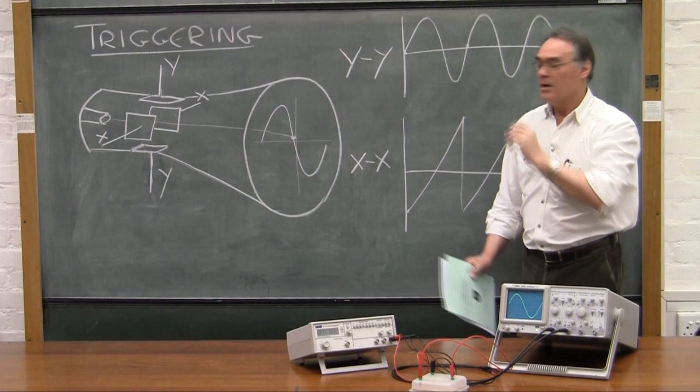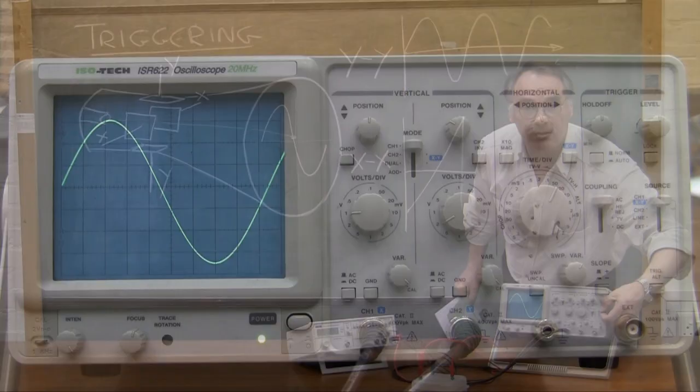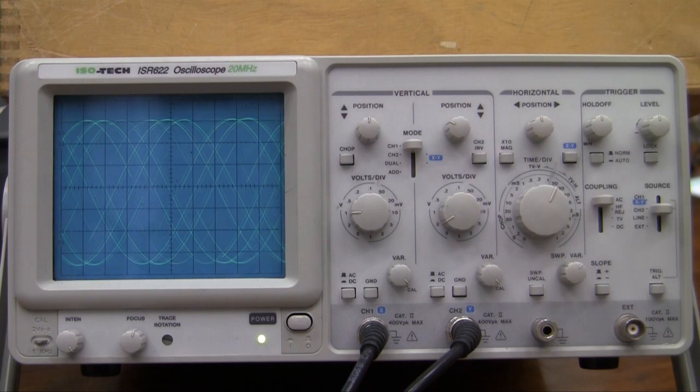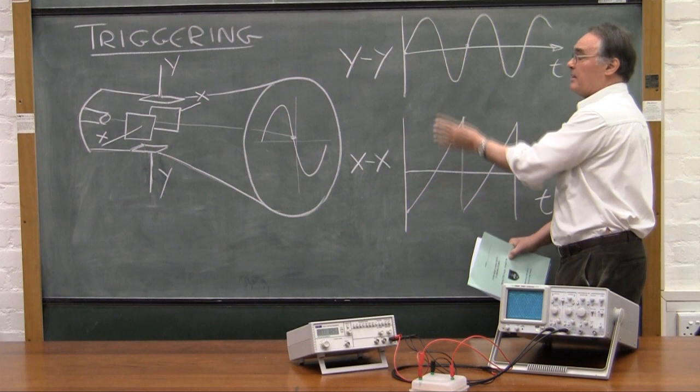But what will happen if I lose the triggering? Well, I can show that quite easily. If I select a source to a signal that doesn't exist, you can see that this runs away and the reason why it runs away is that it cannot synchronize whatever the input signal is to the time base signal.